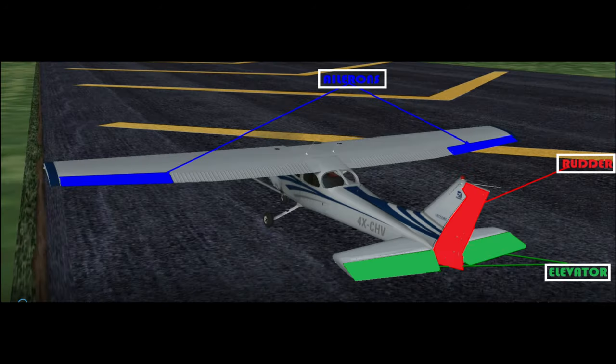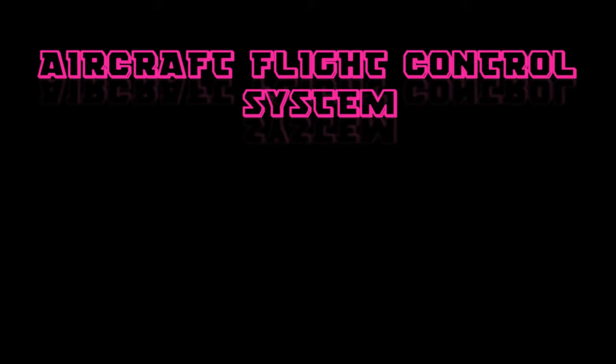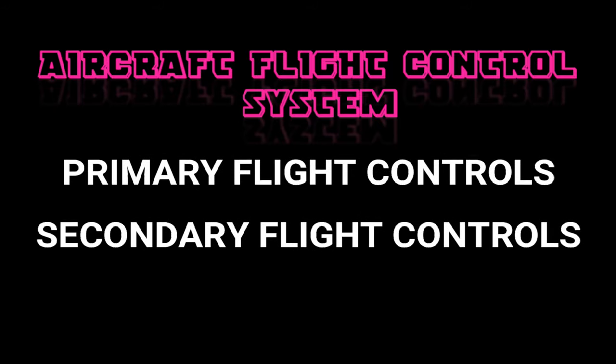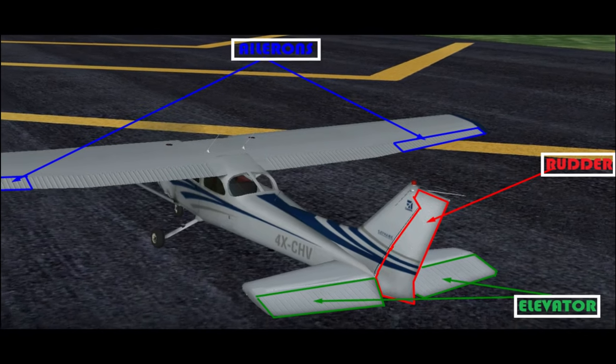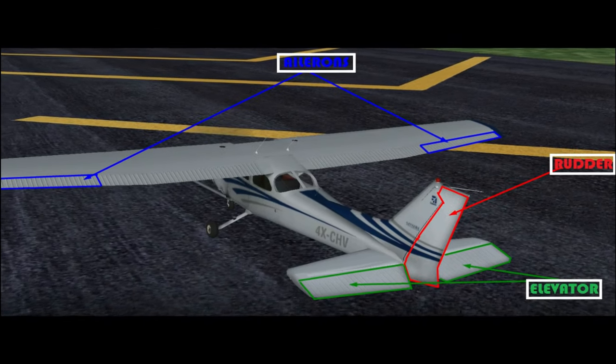All right, let's nail down aircraft primary flight controls once and for all. Aircraft flight control systems consist of primary and secondary systems. The ailerons, elevator, and rudder constitute the primary control system and are required to control an aircraft safely during flight.